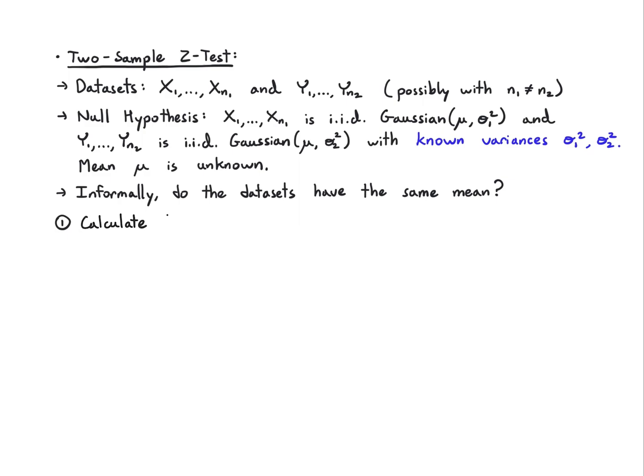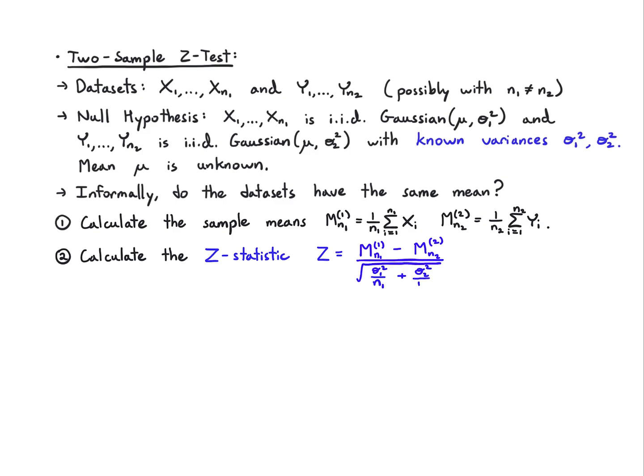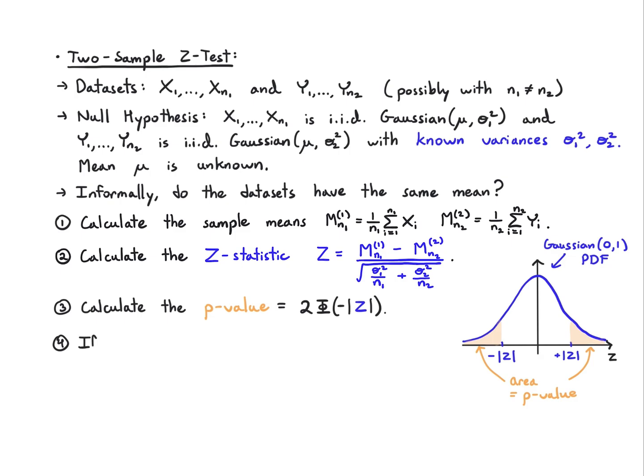We calculate the sample means. We take the sample mean of the first dataset, mn1 raised with this one index, and then mn2 with this two index. Those aren't powers, they're just indices. We calculate the z-statistic by taking their difference and dividing by this effective variance here. If you were to calculate the variance of the difference of these things, if they're independent, this is the variance you would get. You take the square root to get the standard deviation. We calculate the p-value again. The z-statistic is again under the null going to be Gaussian. Same argument.